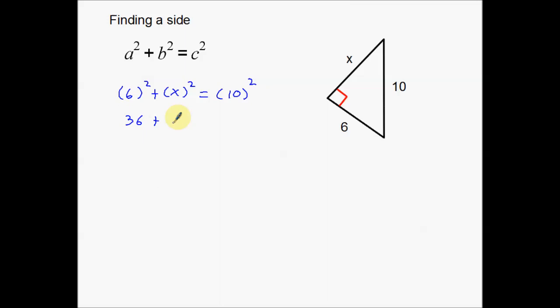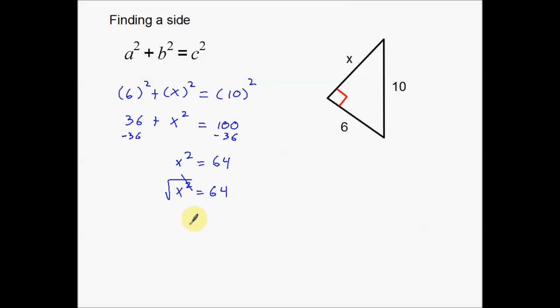So I'm going to start solving. 6 squared is 36, x squared stays as x squared, and 10 squared is 100. Now solving just like a normal equation, I need to get x by itself, which means I take the 36 and subtract it over to the other side. So now I have x squared is equal to 64. Just like last time, to get rid of the squared I need to square root both sides. Squaring and square rooting cancel, leaving just x. The square root of 64 actually comes out evenly — we get 8.